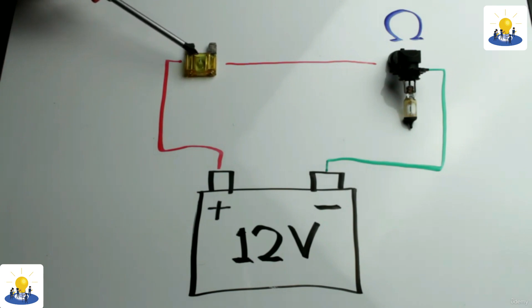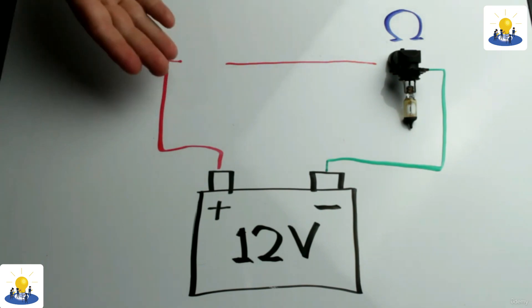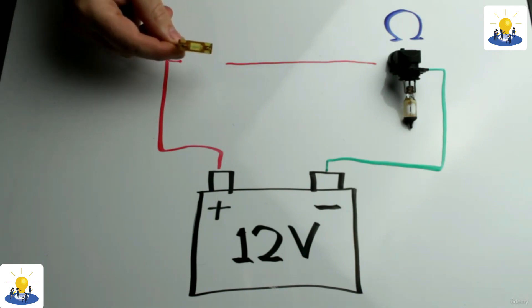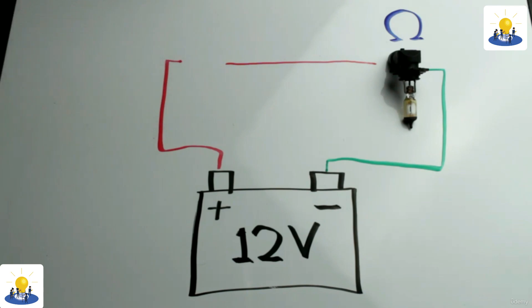Fusible links in the main output feeds from the battery protect against major short circuits in the event of an accident or error in wiring connections. These links are simply heavy-duty fuses and are rated in values such as 50, 100, or 150A.